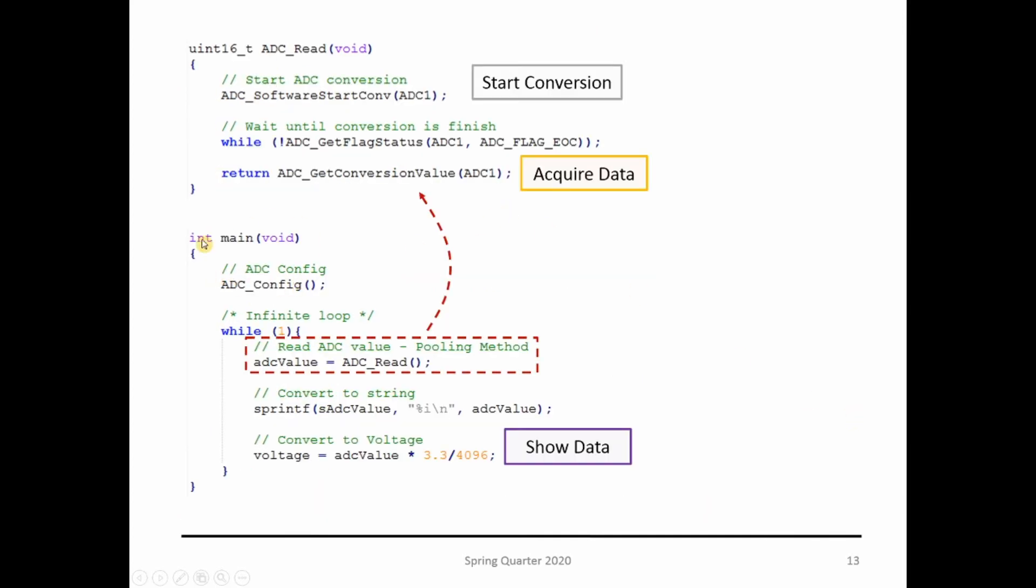If we go over the main code, we just saw what was inside ADC config. Then we go into while one, and I'm putting a function here but I could have this code inline. We start the conversion with software start conversion on ADC1, then wait until the conversion is done. Once it's done, I return the value of that conversion.